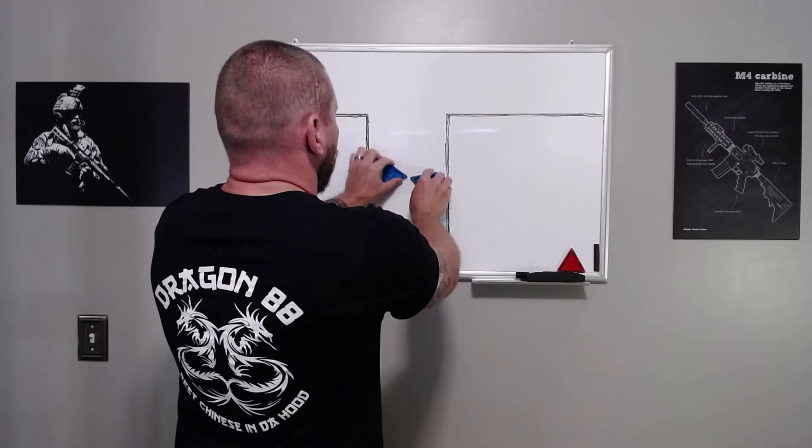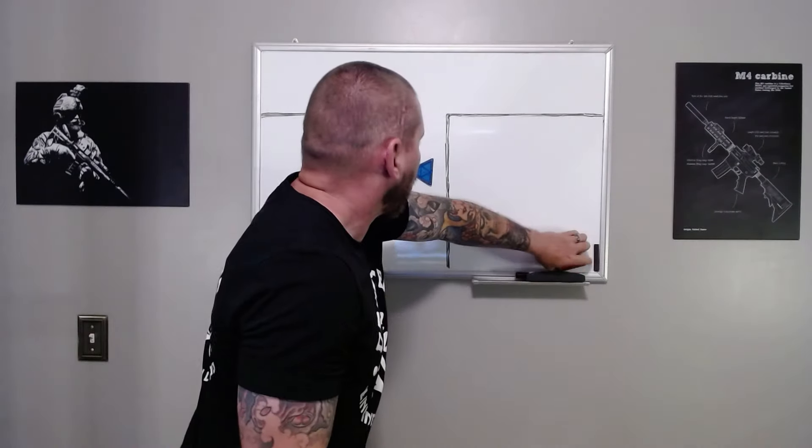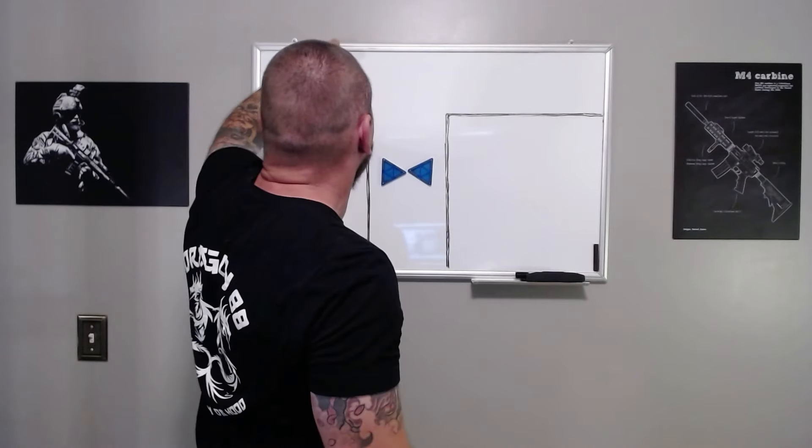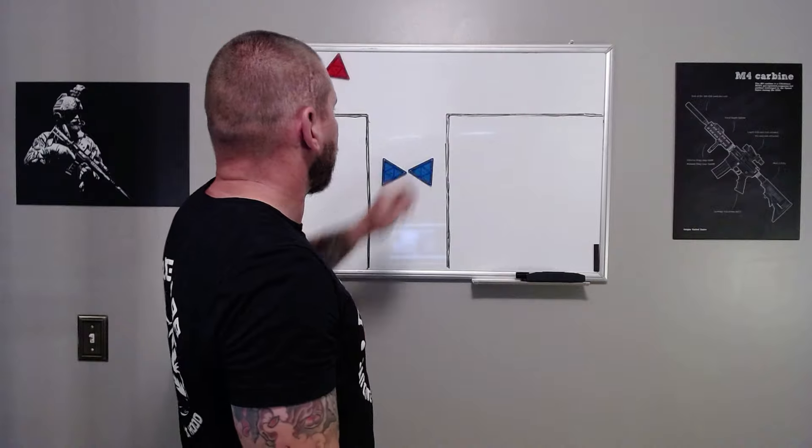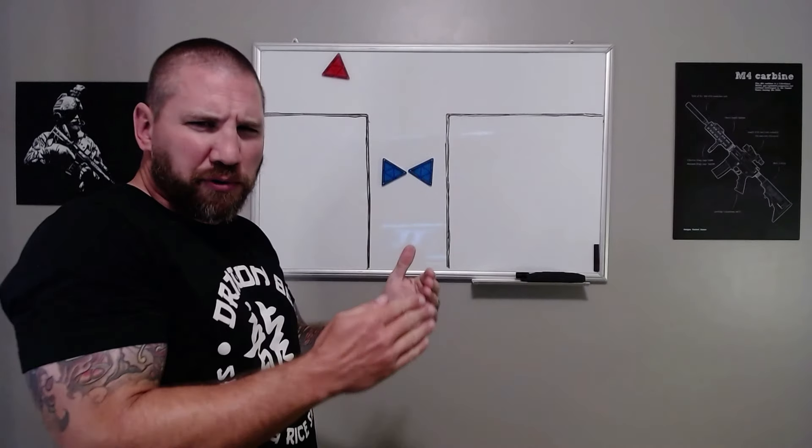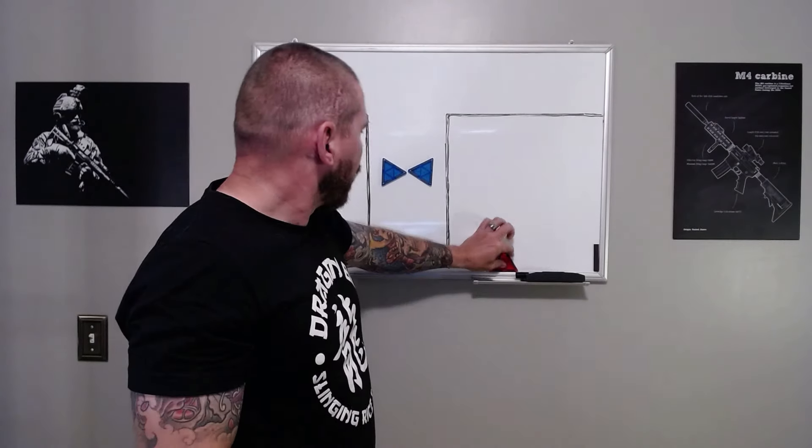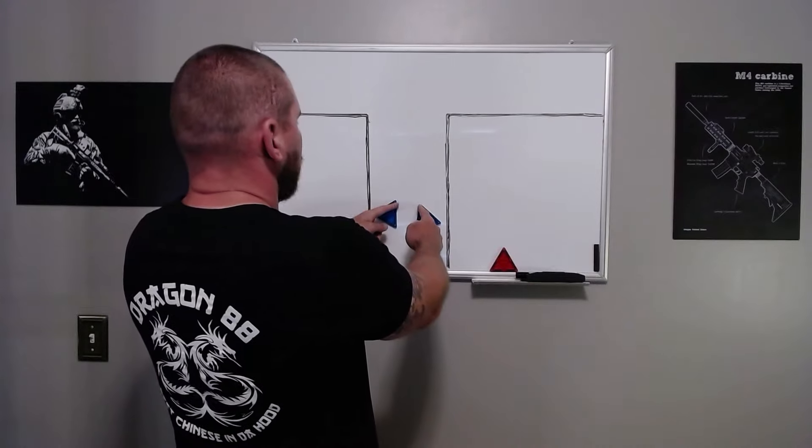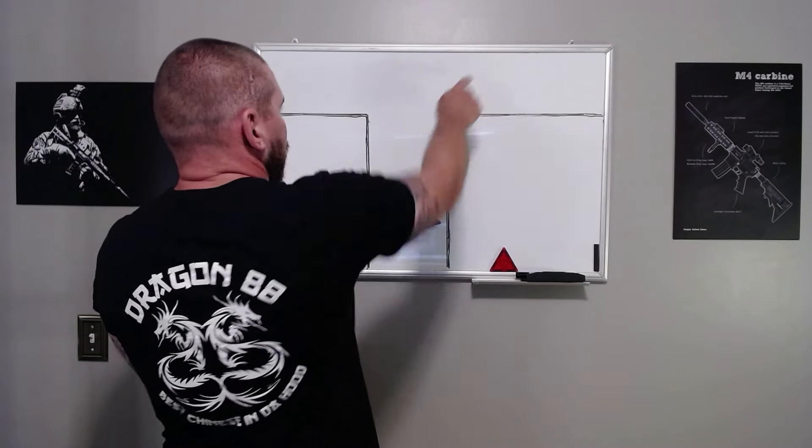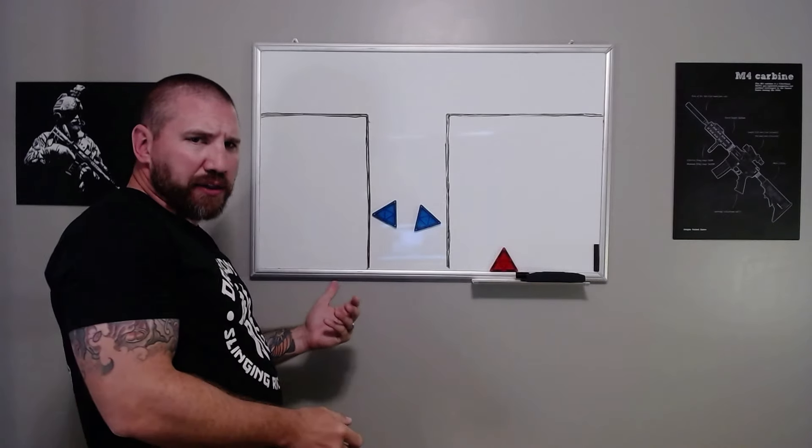The issue with that is if we were trying to just have this guy covering this angle, this guy covering this angle, a bad guy that was here would really not be visible to this guy and could totally see this guy. So that's the reason you got to do cross coverage. You do a similar technique with opposing open doors. I'll cover that in a video later.